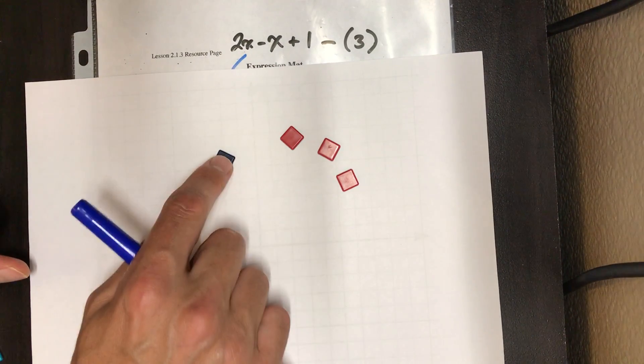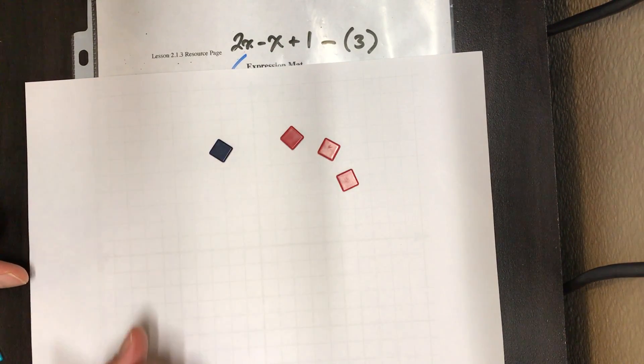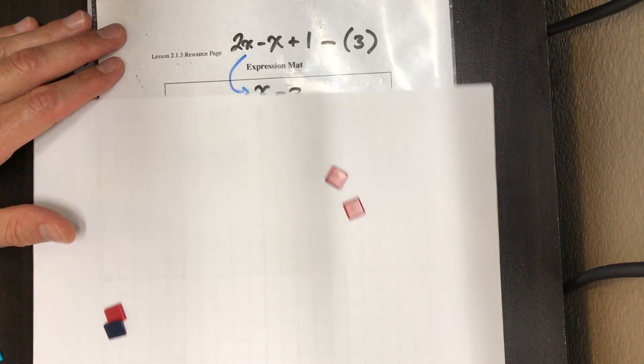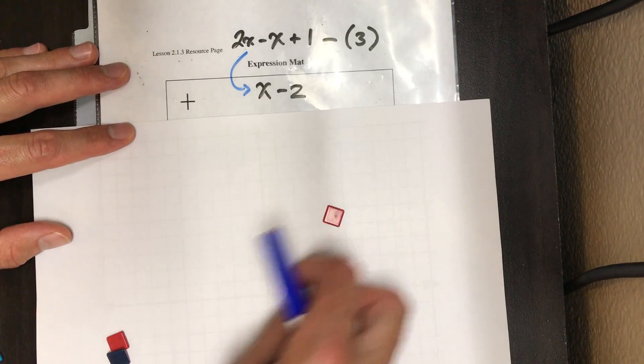So we have one positive and we're taking three away. We create those zero pairs and look at that, we're left with two negatives.